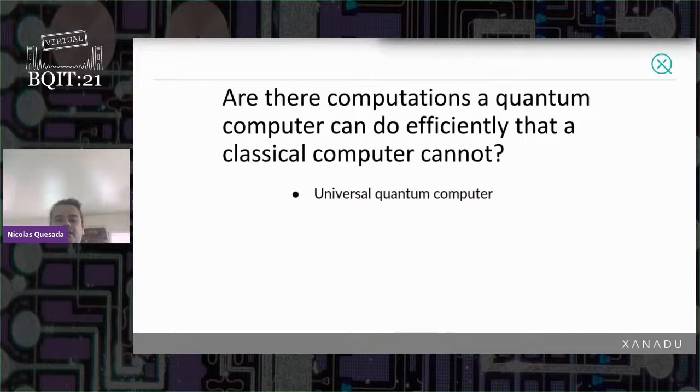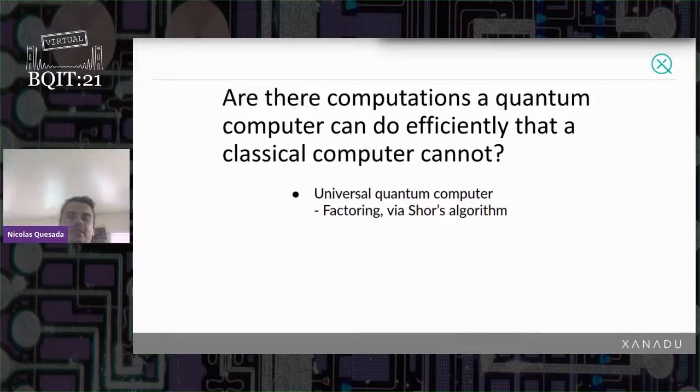So we know that if we had a fault-tolerant universal quantum computer, we can very easily dispute this claim. An example of that is factoring. If you had a universal quantum computer, you could just run Shor's algorithm, get your prime numbers, and then you could actually find out the secrets of half of humanity or something like that.